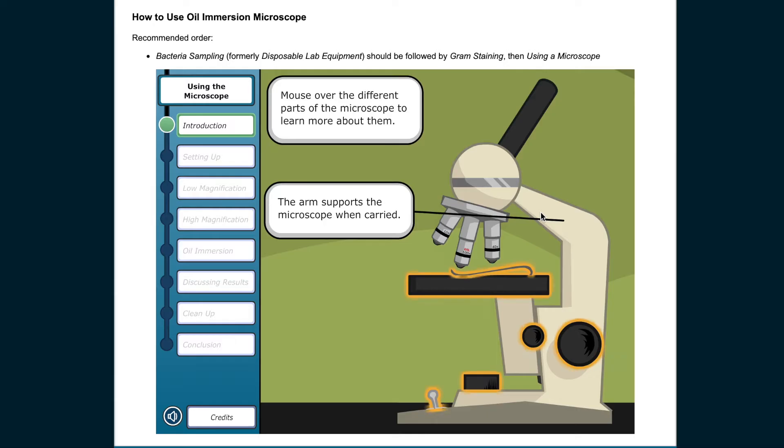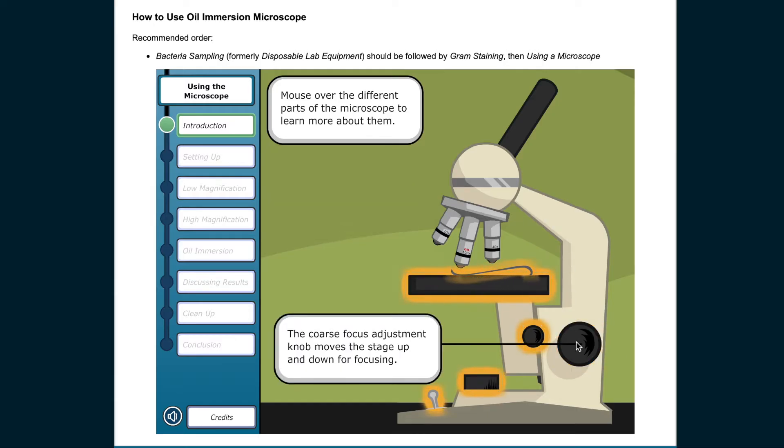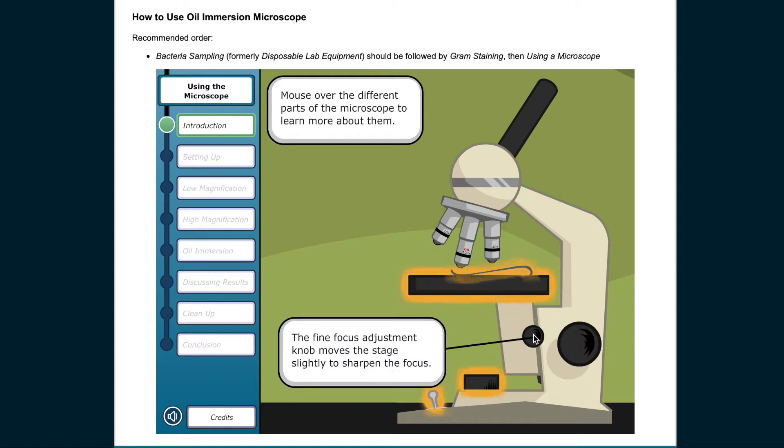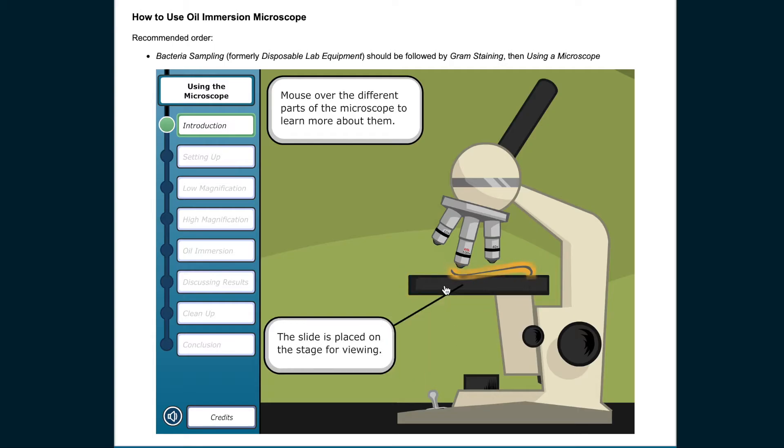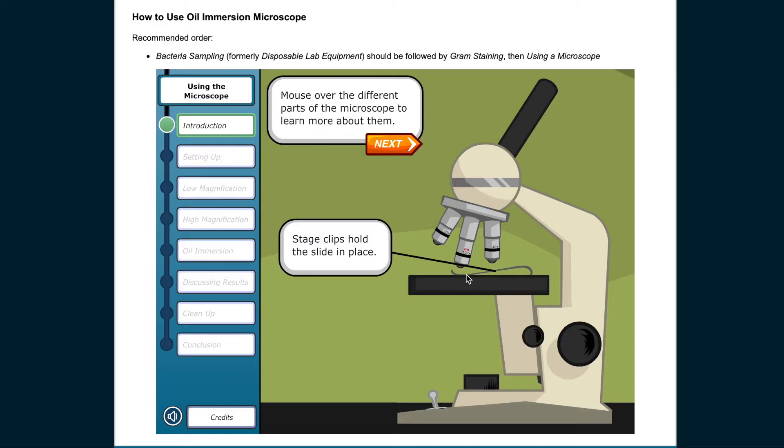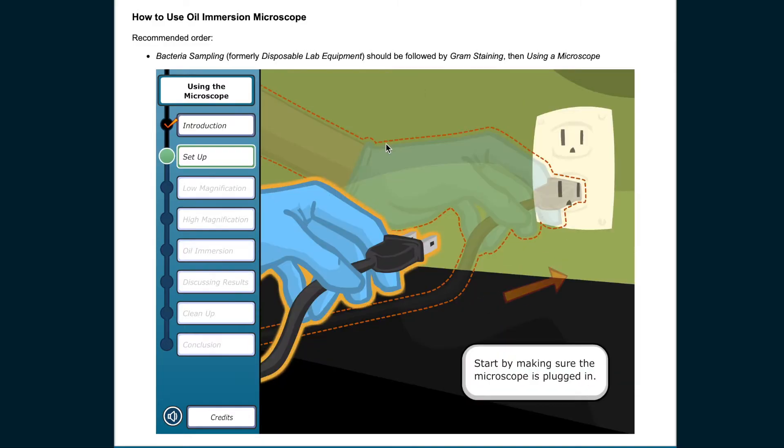The arm supports the microscope when carried. The coarse focus adjustment knob moves the stage up and down for focusing. The fine focus adjustment knob moves the stage slightly to sharpen the focus. The diaphragm adjusts the amount of light on the slide. The light source projects up through the slide to illuminate the sample. The slide is placed on the stage for viewing. Stage clips hold the slide in place.